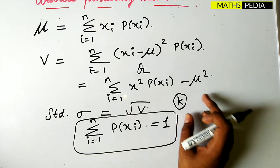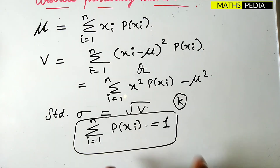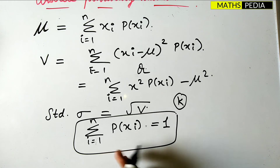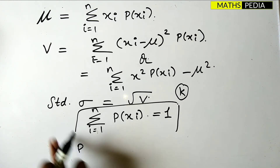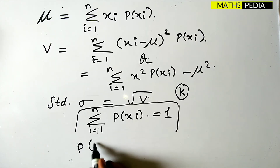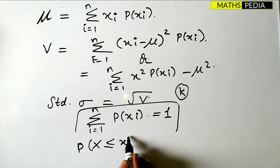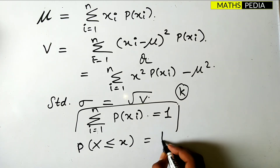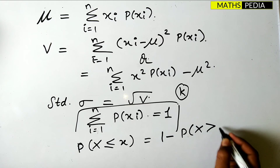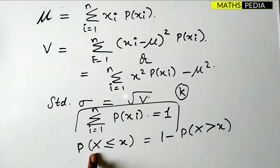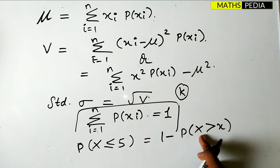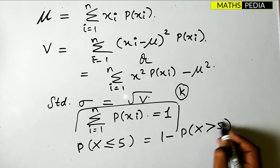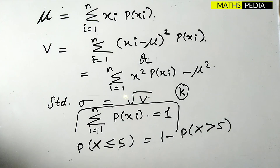One more important thing: whenever you need to find the probability of some X value less than or equal to x, you can use the complement rule — that is, 1 minus P(X greater than x). For example, to find the probability of X less than or equal to 5, you calculate 1 minus P(X greater than 5). This is all about discrete probability distribution.